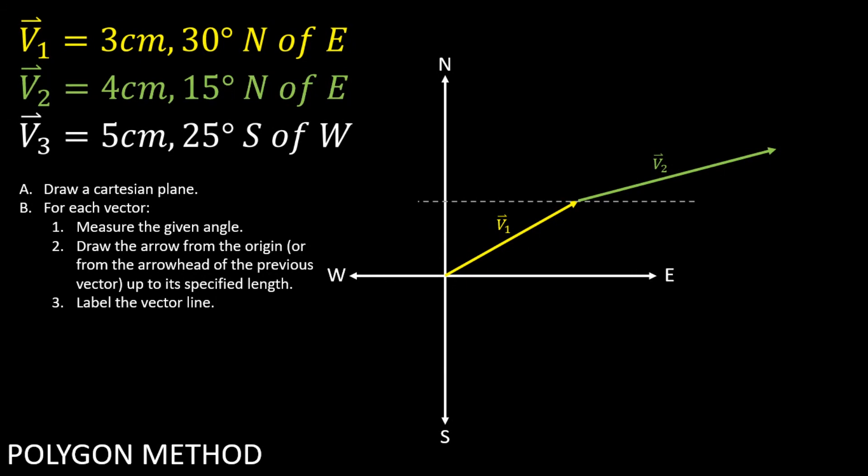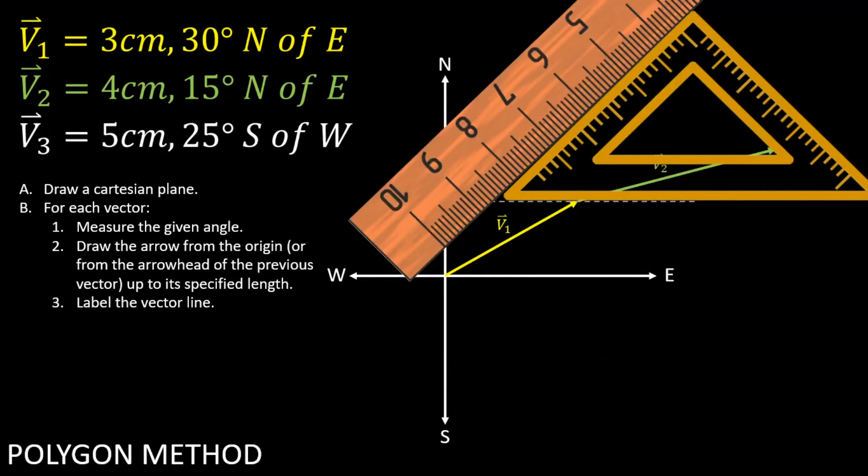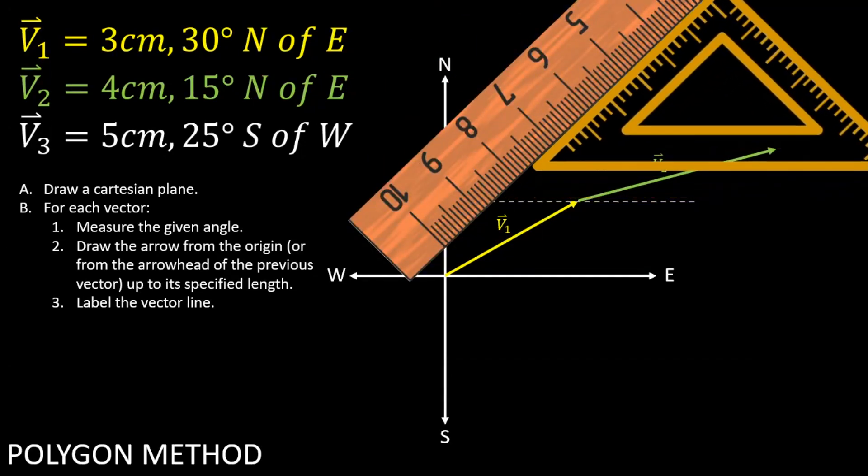Now that you've drawn your second vector line, you can draw another dashed line as reference for drawing your third vector.